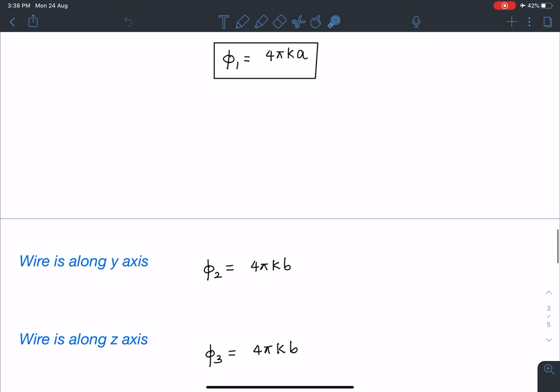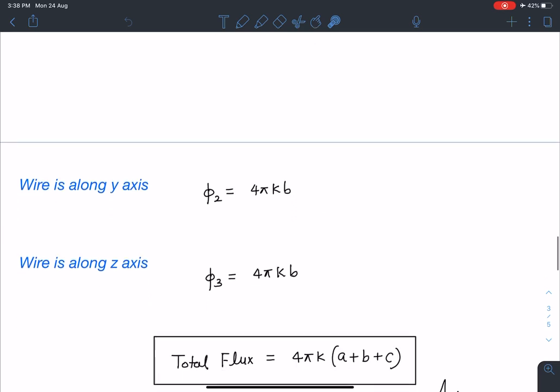Similarly I can write for wire along y axis this will become 4 pi kb and for wire along z axis this flux is going to be 4 pi kc. So this is going to give me c here.